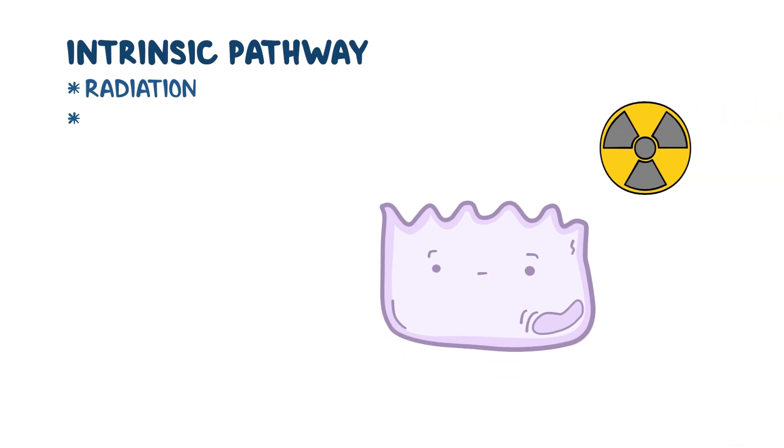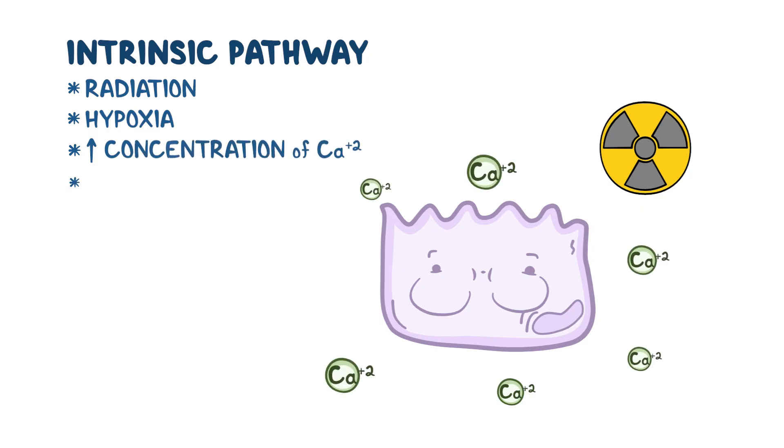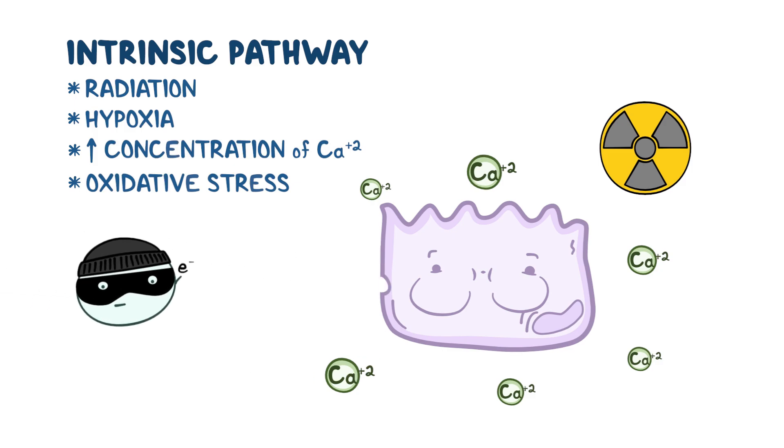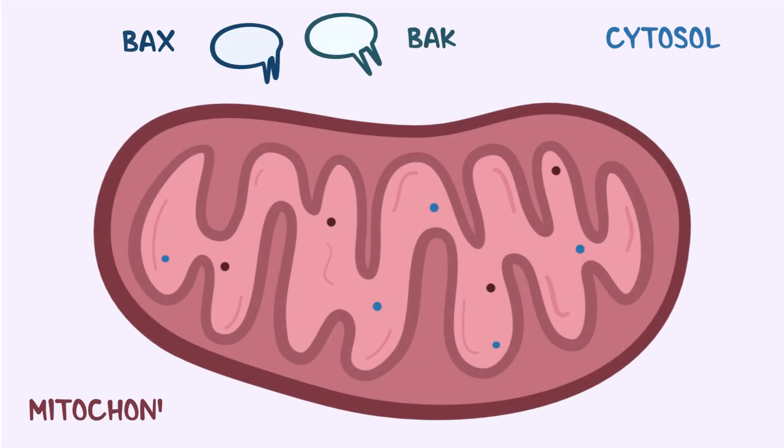The intrinsic pathway occurs when a cell is exposed to stress, like radiation, hypoxia or low oxygen, a high intracellular concentration of calcium ions, or oxidative stress, which is where reactive molecules with unpaired electrons, called free radicals, steal electrons from nearby molecules. These stressors cause two intracellular proteins, BAX and BAK, to move from the cytosol to the mitochondria.